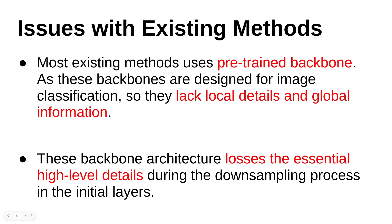Now, what are the issues with existing methods that U²-Net has solved? Most existing methods use pre-trained backbones such as VGG, ResNet, ResNeXt, DenseNet and more. These backbones are designed for image classification, so they lack the local details and global information which are really important for salient object detection. So using a pre-trained backbone is not as efficient as it should be.